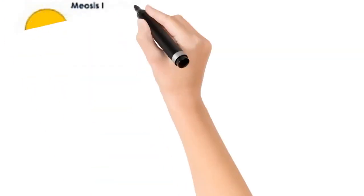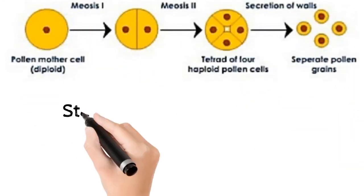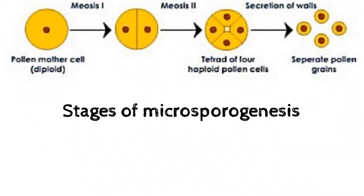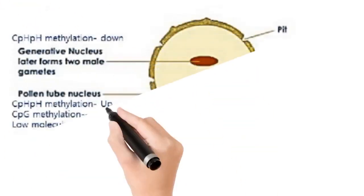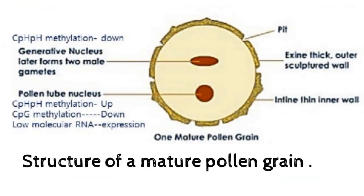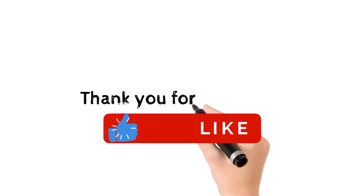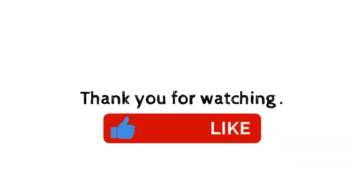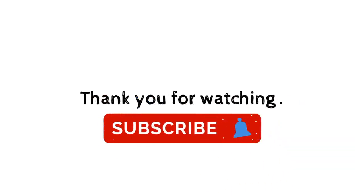Here is shown the diagram of the stages of microsporogenesis. The structure of the mature male gametophyte or pollen grain is also shown here. Thank you all for watching — hope it helps. Please like, share, comment, and subscribe for more videos.